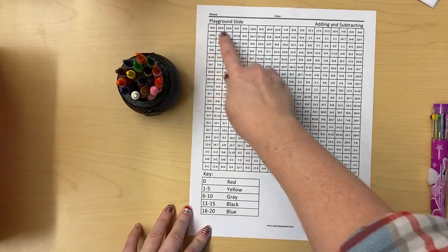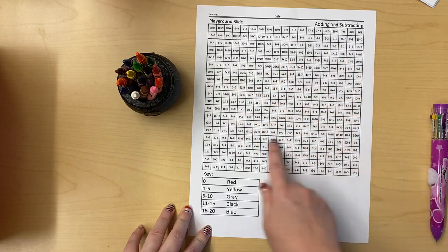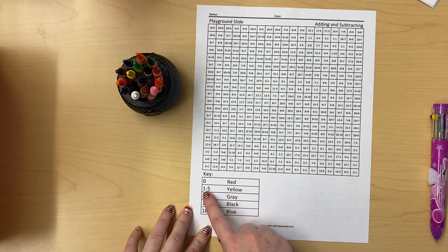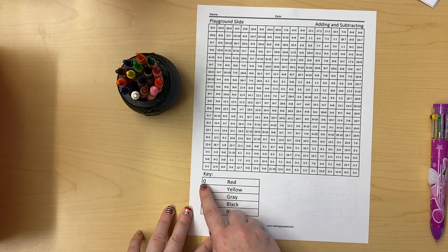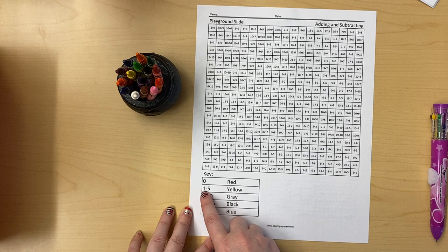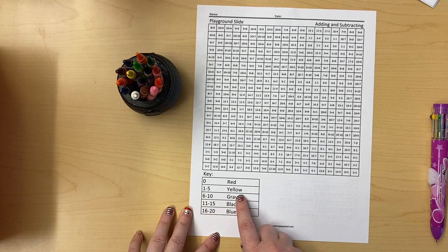So first you need to look at all of the equations in the little boxes to figure out what color to color them. The key at the bottom tells you what color to color them. So if there's any answers that are gonna be zero, all of those are gonna be red. Anything from 1 to 5, that's 1, 2, 3, 4, and 5, I'm gonna color those yellow.